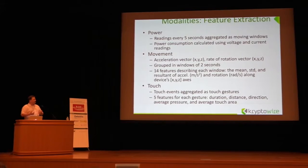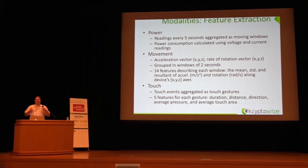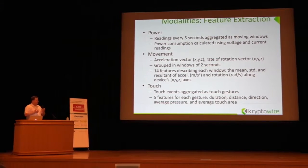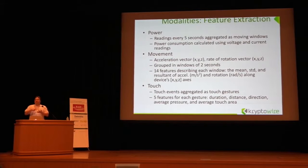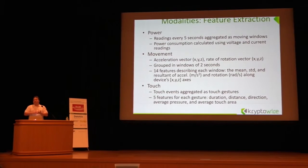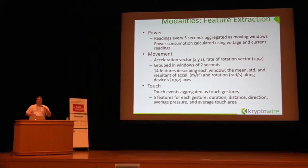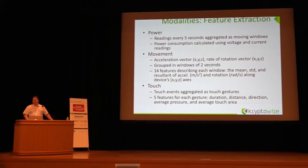Touches can be paired with the other events. Touches are not necessarily very unique for a set of users but they are very easy to collect, and depending on the rate at which we use the phone, we can generate a lot of data. There are five features for gesture: duration, distance, direction, average pressure, and average touch area. Average pressure is interesting because different people tend to press the phone surface differently at different locations.